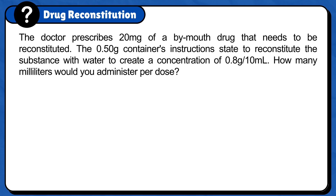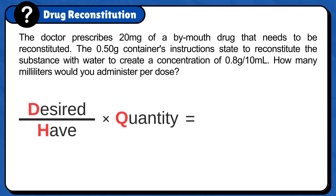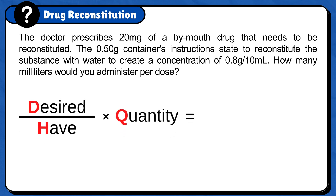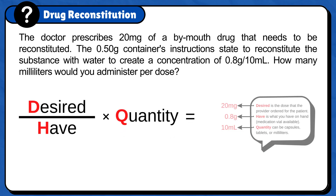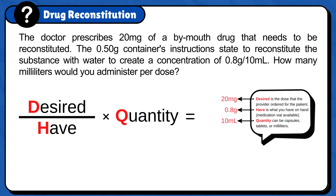First, set up the formula: desired over half times quantity. Desired is the dose that the doctor ordered for the patient. Half is what you have on hand. And quantity can be capsules, tablets, or milliliters.